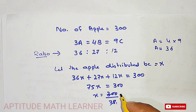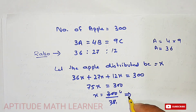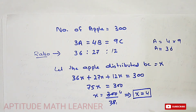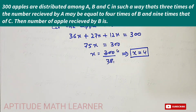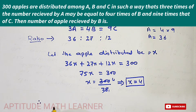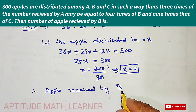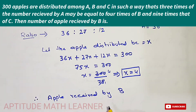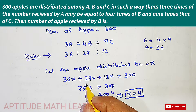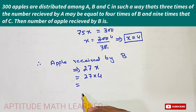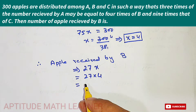So x is equal to 300 divided by 75, which gives us x equals 4. Now, the number of apples received by B: B's ratio is 27, so apples received by B equals 27x, which is 27 multiplied by 4, giving us 108.